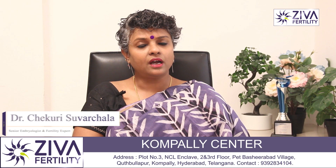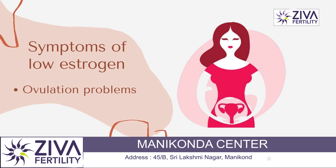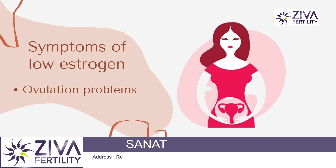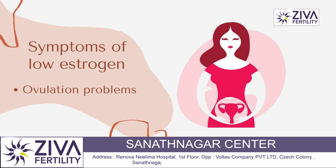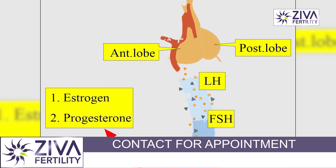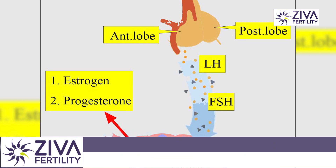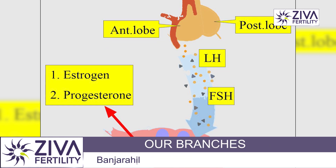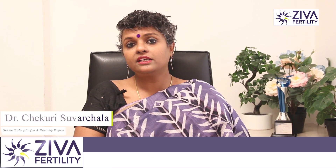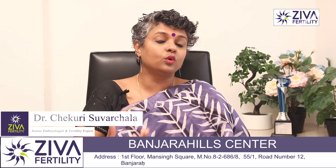Let's try to understand how low estrogen causes infertility. When estrogen is constantly low, ovulation might be a problem because with the proper release of estrogen only, the FSH hormone then begins to recruit follicles. If the estrogen is constantly low, it means that the egg is not growing properly, therefore it does not ovulate.